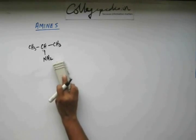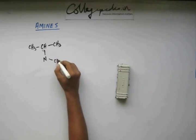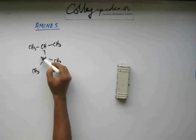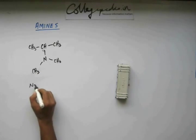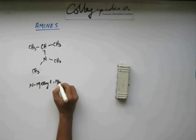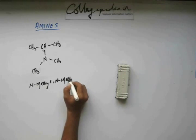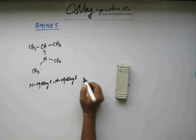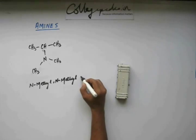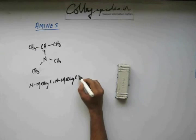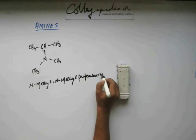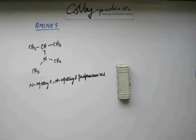Now if we replace these two hydrogens by two methyl groups, then these two methyl groups or this whole amine part is named as N-methyl, N-methyl. You can also name it as N,N-dimethyl or N-methyl, N-methyl-propenamine. This is how you are going to name it.